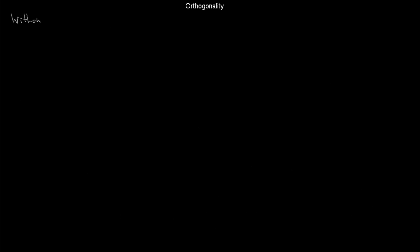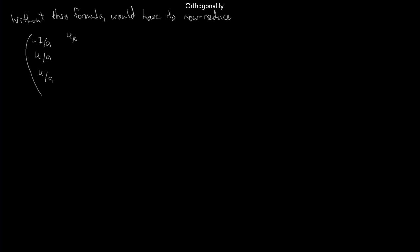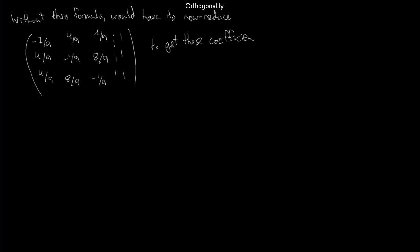If your v1 through vn are just orthogonal and not orthonormal, it's still not too bad. The coordinates of v relative to your orthogonal basis are: Ci = (V·Vi) / ||Vi||². You take the dot product of V with Vi and divide by the norm of Vi squared. For an orthonormal basis, you were dividing by 1, so this is the more general formula.